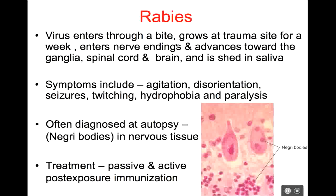Unfortunately, once the infection gets to the brain, the encephalitis that results is almost always fatal. People generally die of rabies infections, just like animals generally die of rabies infections. In fact, it's often diagnosed at autopsy. If you have a suspected rabies case, you can take tissue samples from the brain or spinal column and look for what are called Negri bodies — these are diagnostic for a rabies infection.